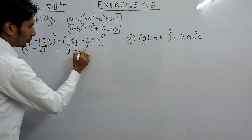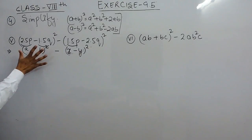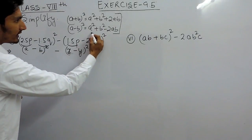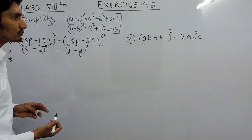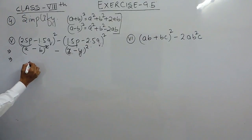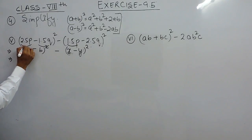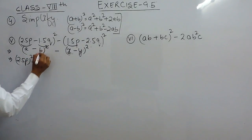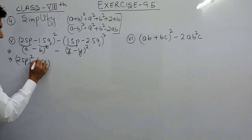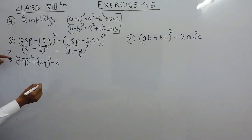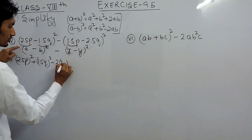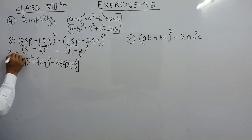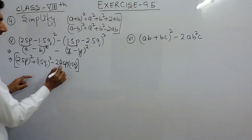If you want to expand this using the identity, we know that (a − b)² equals a² + b² − 2ab. So I can expand the first term as a² + b² − 2ab, where our a is 2.5p. This should be equal to (2.5p)² + (1.5q)² − 2 × 2.5p × 1.5q. So this is the expansion of the first term.